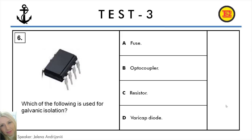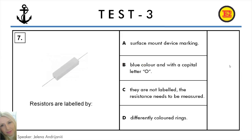Question number 6. Which of the following is used for galvanic isolation? A: Fuse, B: Optocoupler, C: Resistor, D: Varicap diode. And the correct answer is B: Optocoupler.